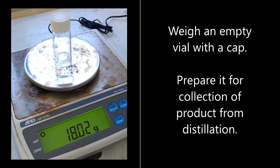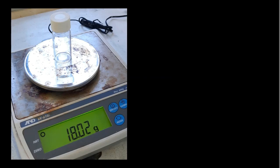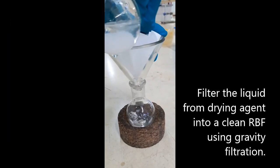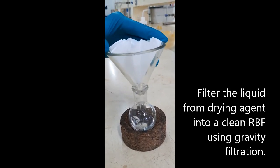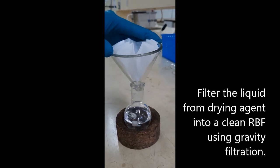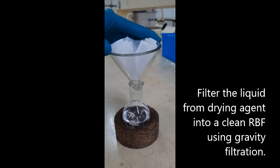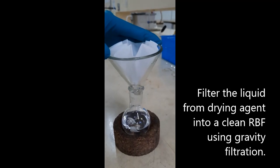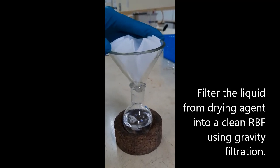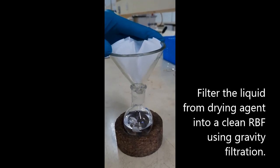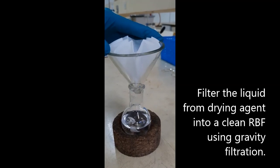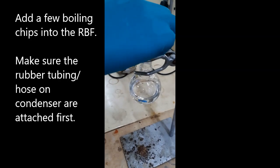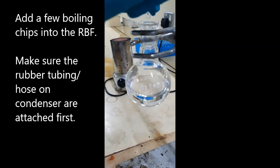Weigh an empty vial with the cap on and record the weight. Filter the organic liquid product through a filter paper straight into a suitable sized round bottom flask. Add a few pieces of boiling stones to the round bottom flask.